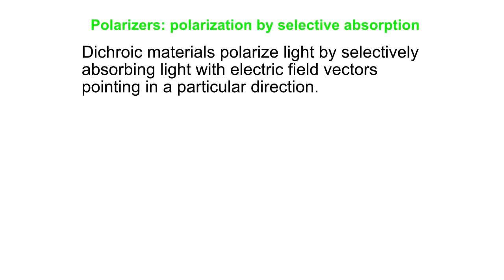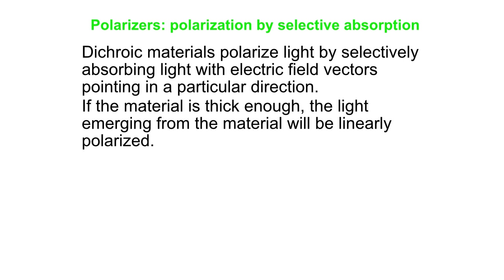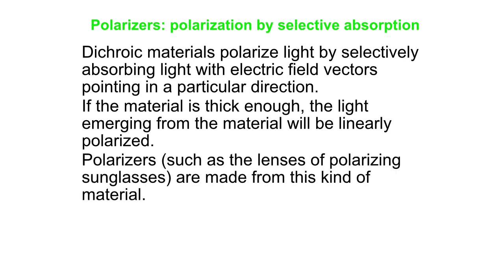Polaroid film is known as a dichroic material. Those materials are made from very long chain molecules that are all lined up. Because of the way it's made, this material selectively absorbs light with electric field vectors pointing in one direction, and just passes through the vectors that are perpendicular to that. So as long as it's thick enough, you can absorb all the e-field vectors going one particular way, and light comes out with all the e-field vectors going the other way — it's linearly polarized.